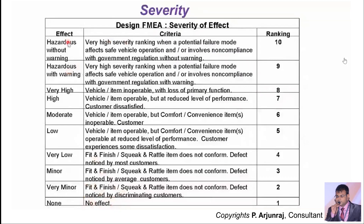Starting with the high numbers: if the Severity is rated 10, it means you have a very high severity ranking where a potential failure mode affects the safe vehicle operation and relates to non-compliance with government regulations. With a warning, it is rated 9. If the vehicle or item becomes inoperable with the loss of primary function, you give 8 points.